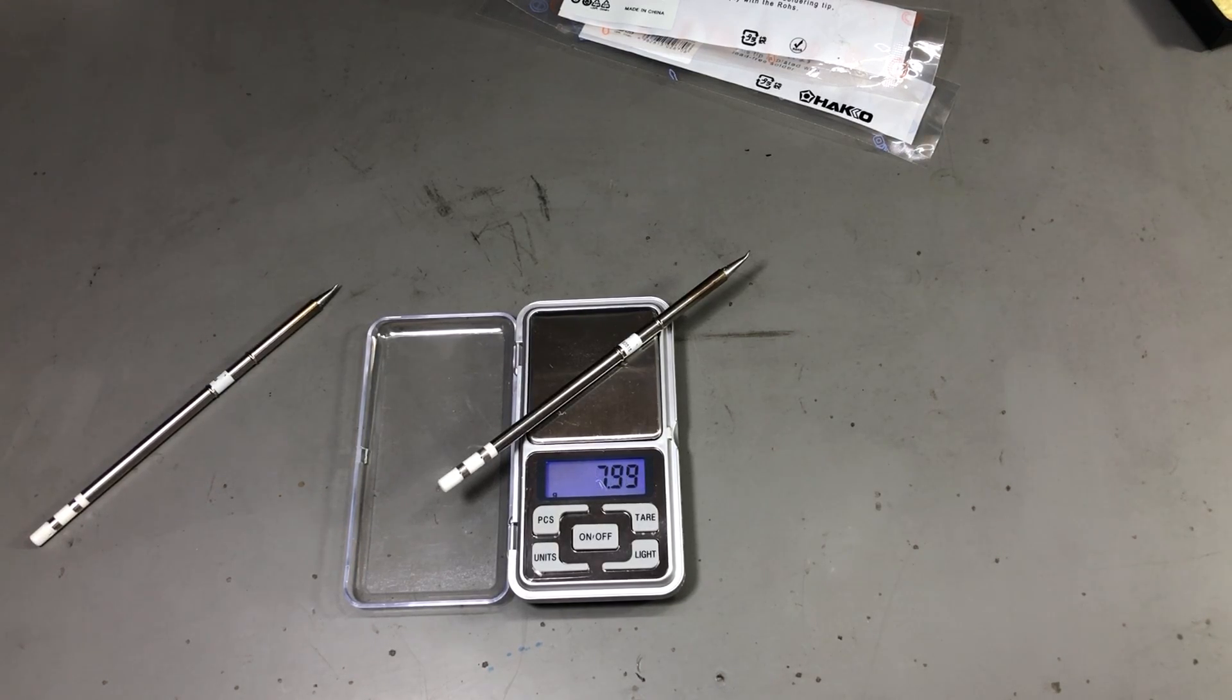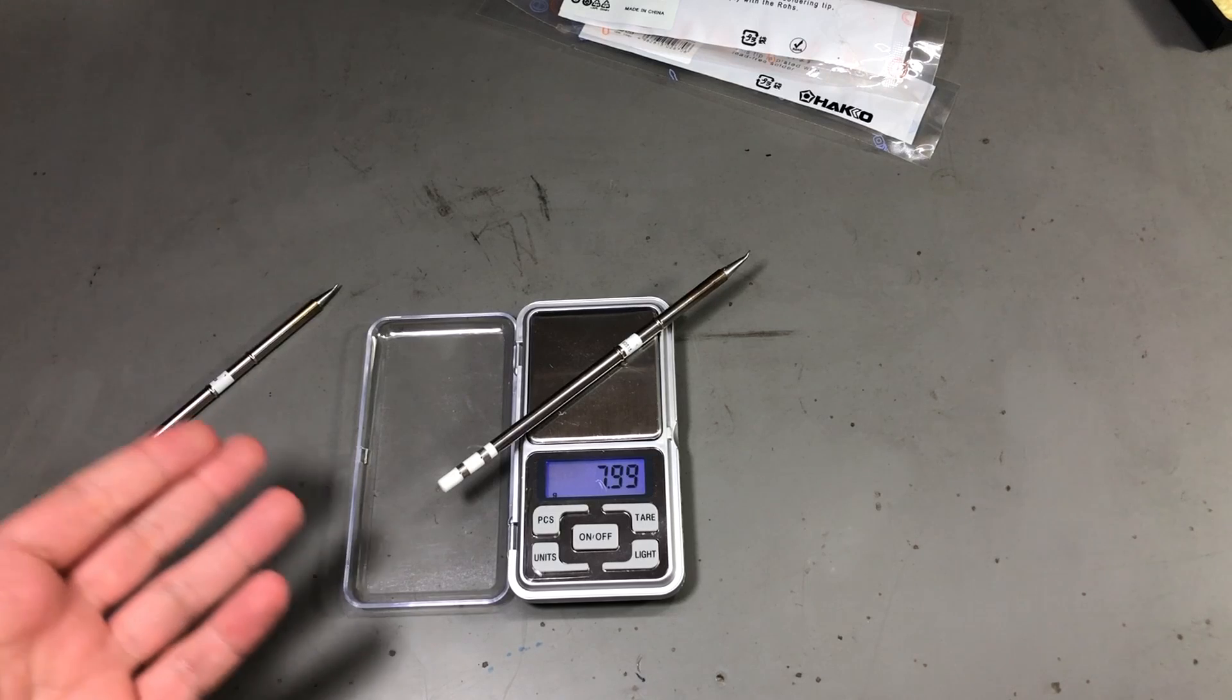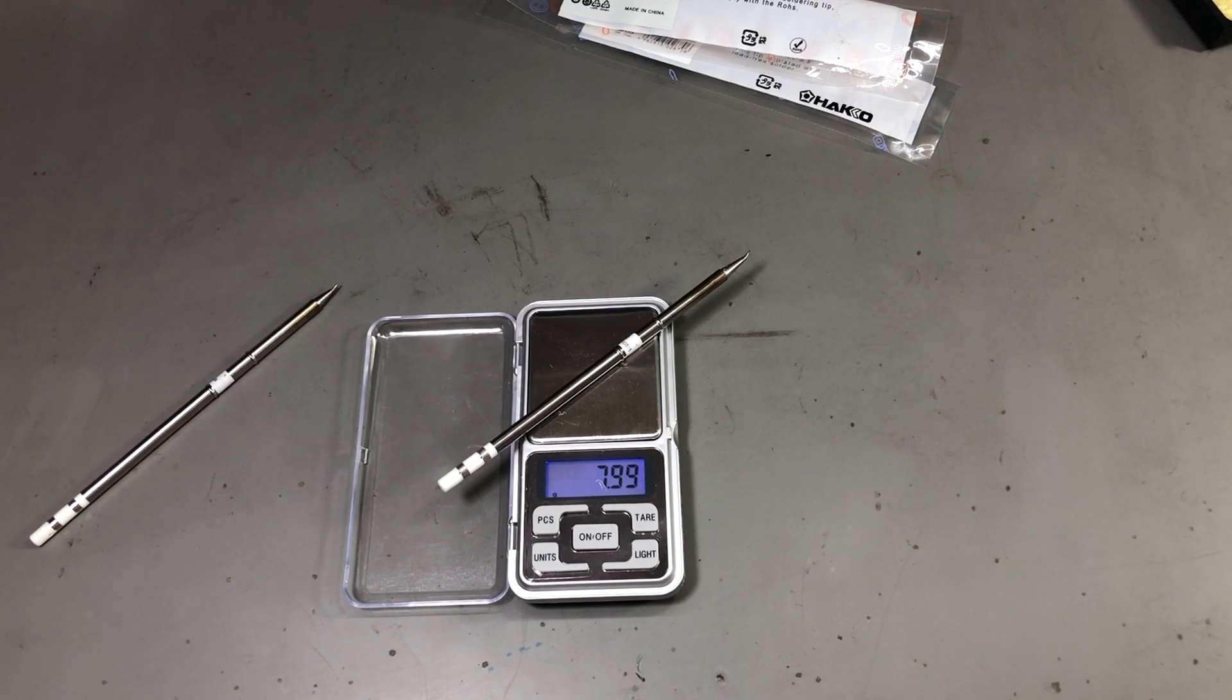I'm not sure of the variations, here I should have more tips to test. Maybe half a gram is an acceptable variation between tips even from the same batch or even from the same genuine batch. I'm not sure, maybe you can measure the ones you have at home and let me know in the comments below what kind of measurements you have.